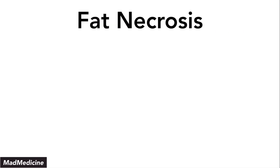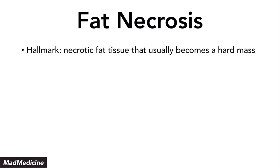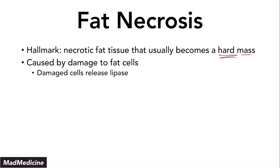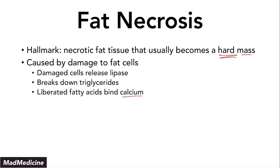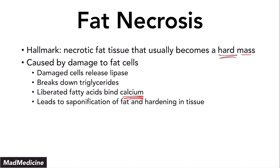Next, fat necrosis. Fat necrosis occurs when fat tissue becomes necrotic, and the hallmark is that it becomes a hard mass. This happens due to damage to fat cells — when fat cells get damaged, they release lipase. Lipase breaks down triglycerides, releasing fatty acids. Those fatty acids bind to calcium, leading to saponification of the fat, which causes hardening of the tissue. That is how fat cells become hard.